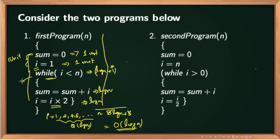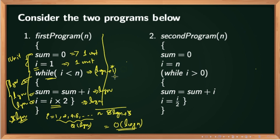The key insight is that given a program, we first need to find out the instruction that is going to get executed most of the time. You do not need to compute the exact number of steps because anyway we are going to ignore constant terms. So you only need to find out the approximate number of steps that a particular instruction is getting executed.